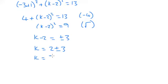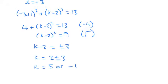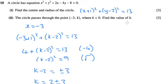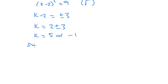So k is either 5 or 2 minus 3 is negative 1. It said that k was negative, it said k was less than 0. So since k is negative, k must equal negative 1.